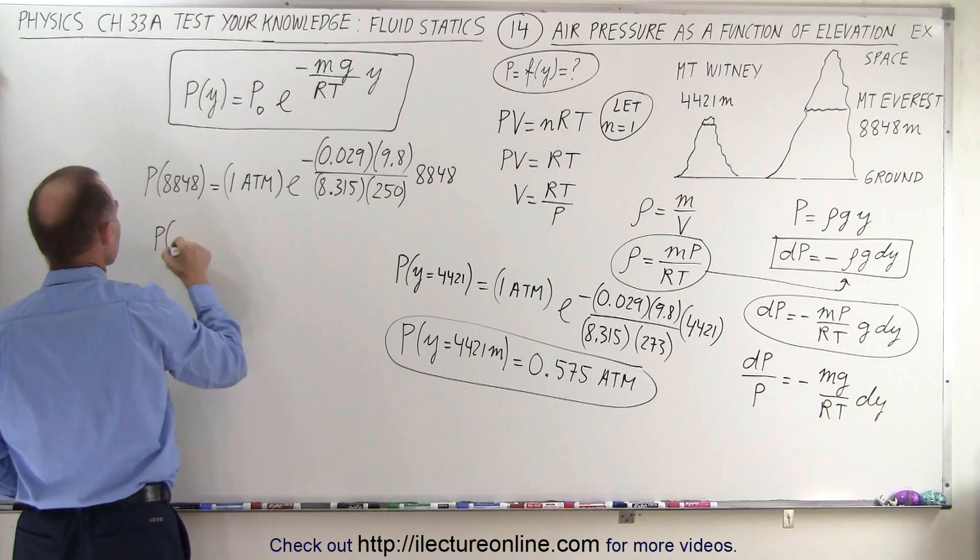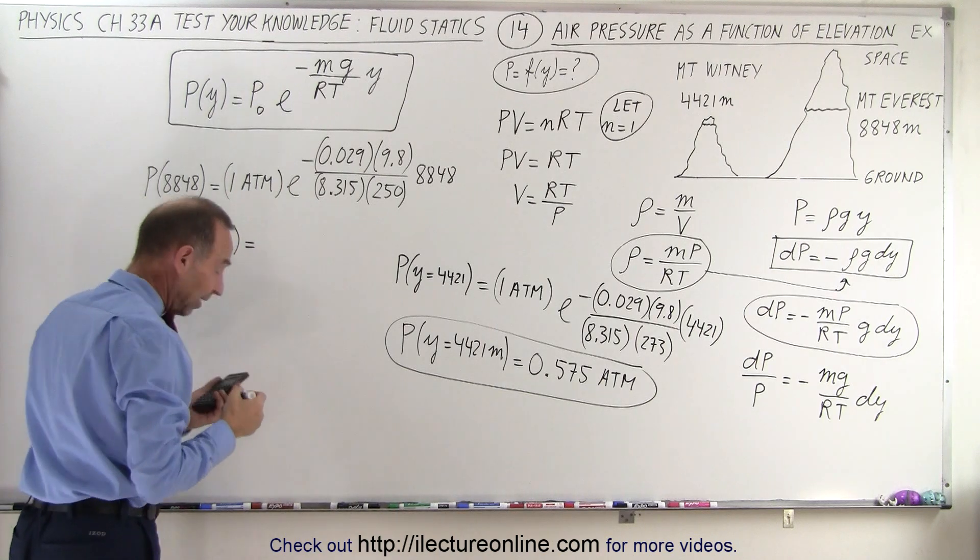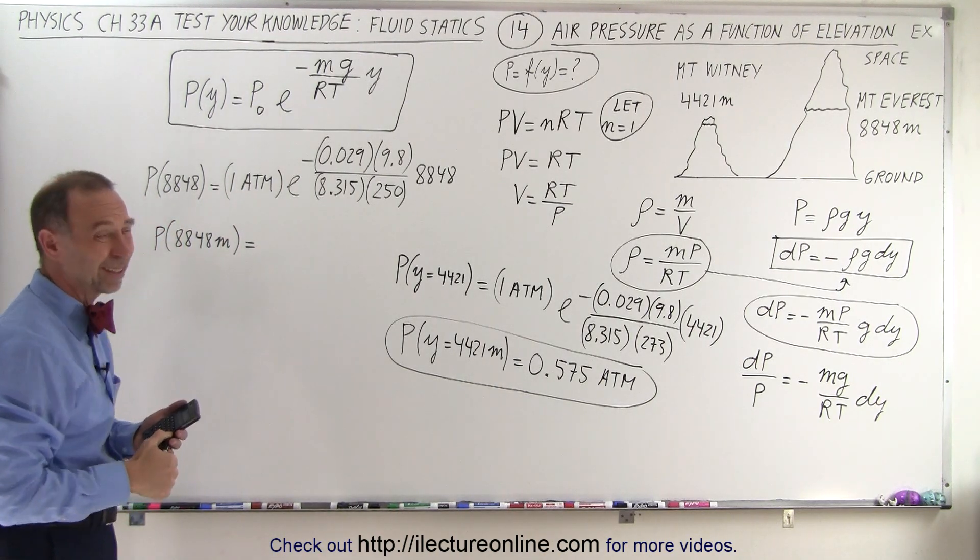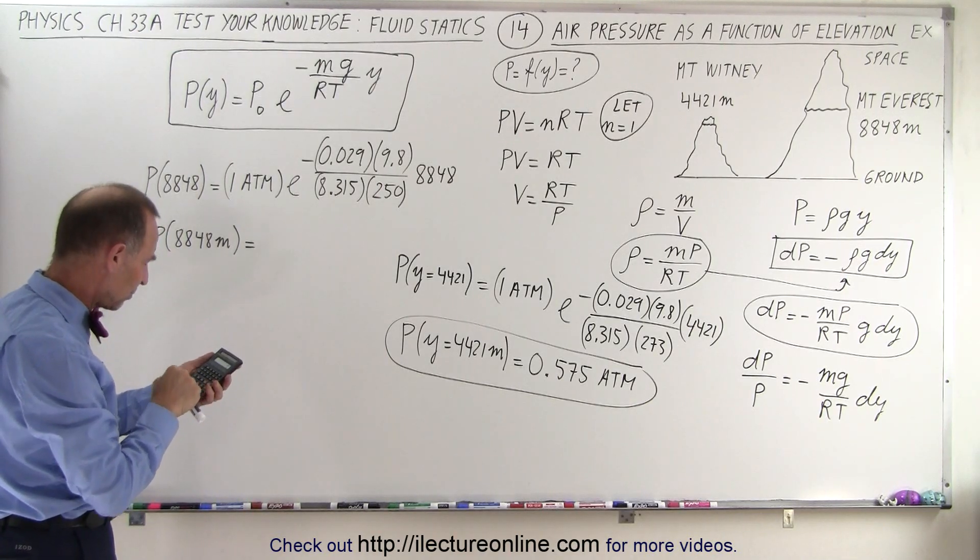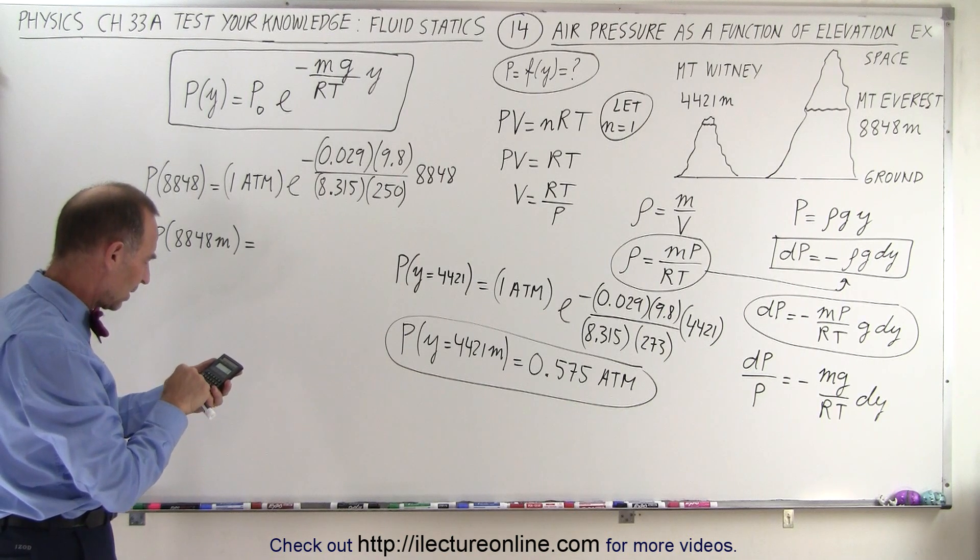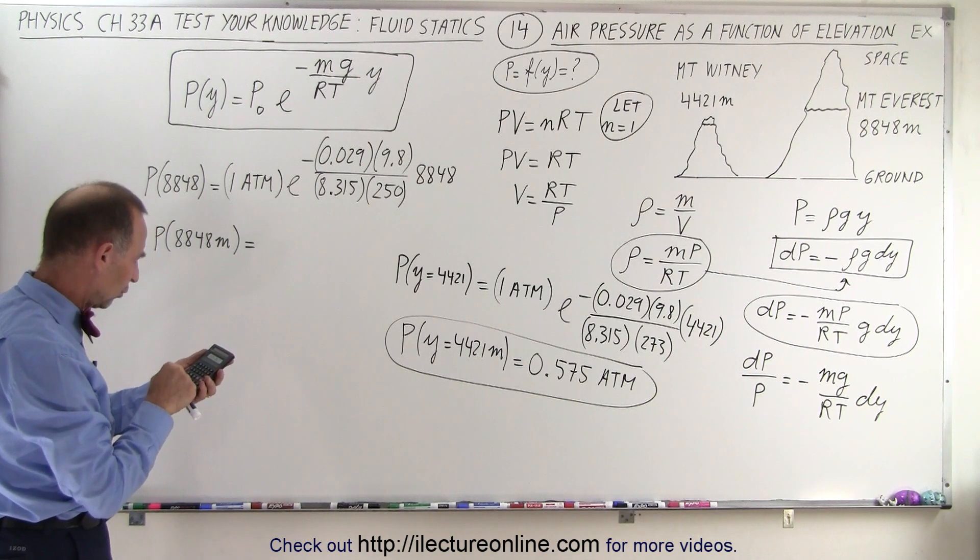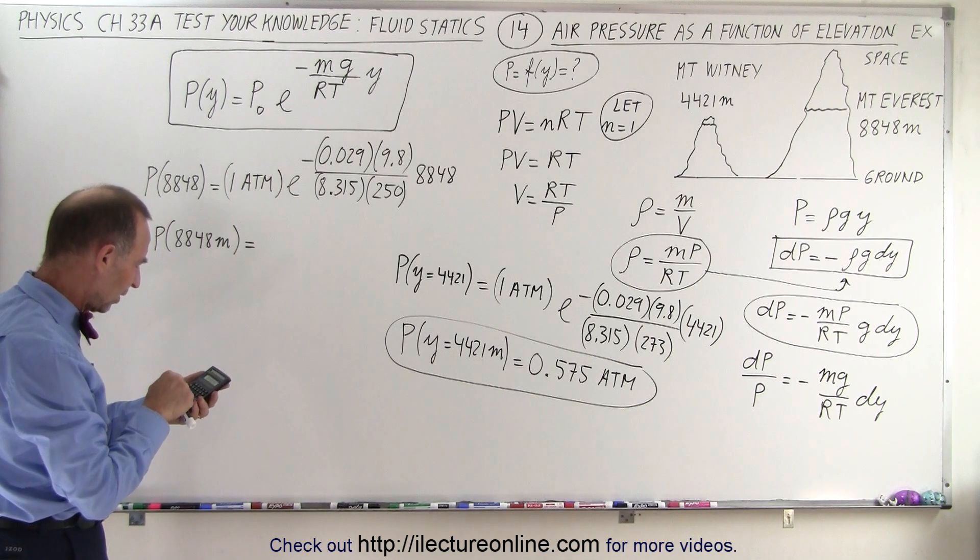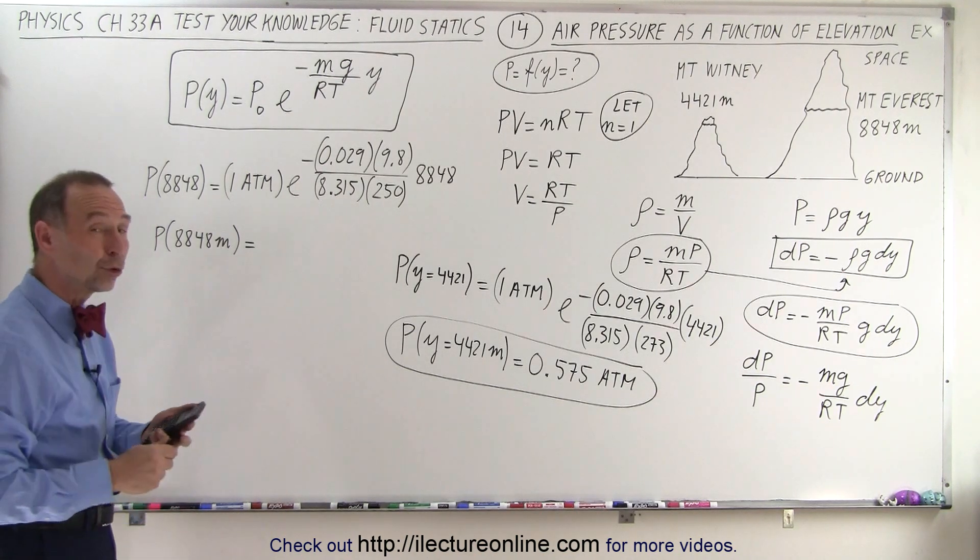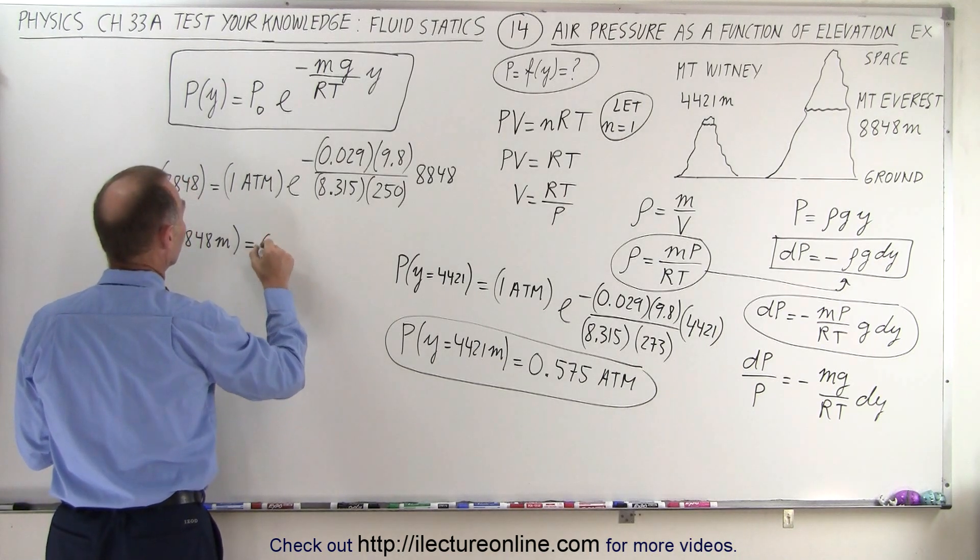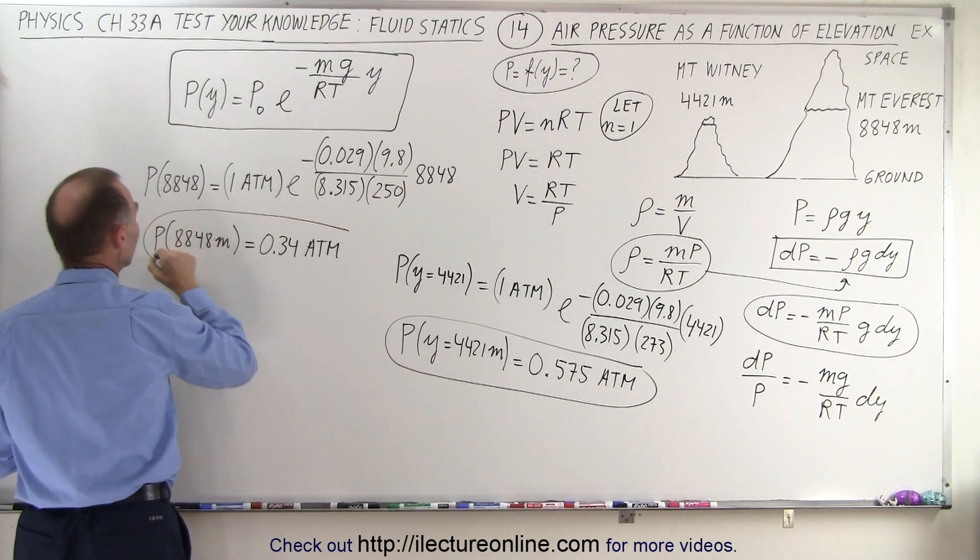So let's see what the air pressure is like on top of Mount Everest on a typical day. Probably a typical summer day. 0.029 times 9.8 times 8848, divided by 8.315, divided by 250, put a negative in front of that, e to the x. And that would be about 34%. So that would be equal to 0.34 atmospheres. So there the atmospheric pressure is down to about a third of what you have at sea level.